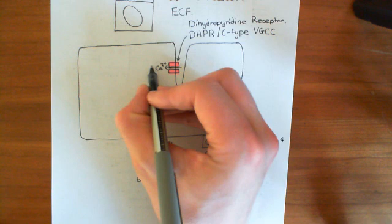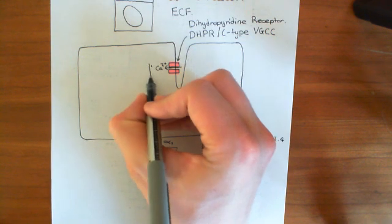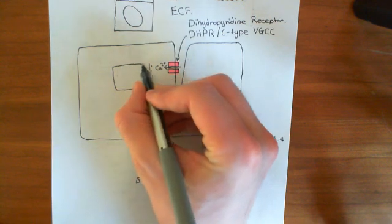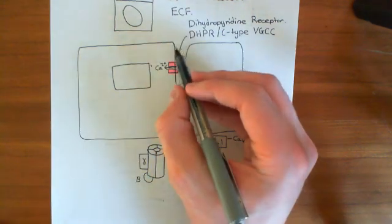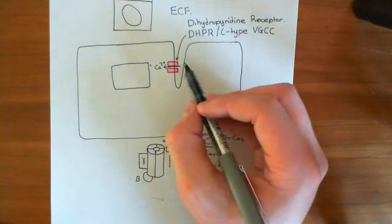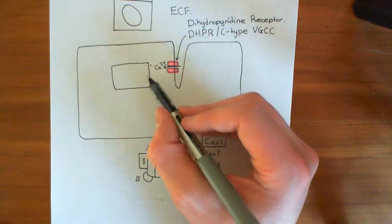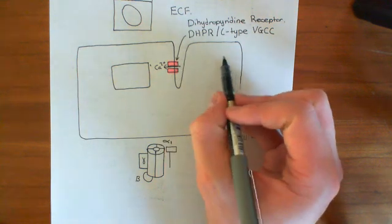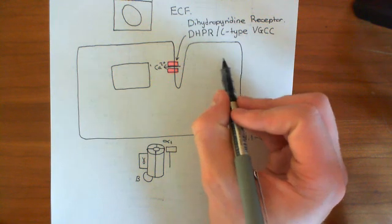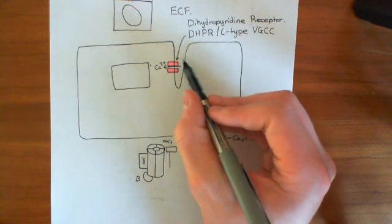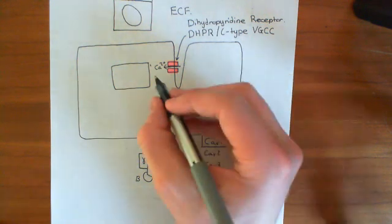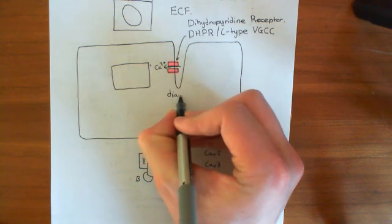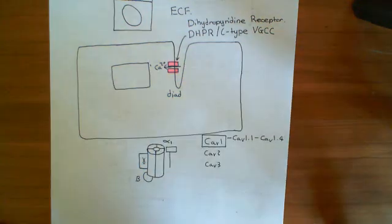Just as in skeletal muscle, the sarcoplasmic reticulum of the cardiomyocyte is positioned closely to the T-tubule. In cardiac muscle, you generally only see one sarcoplasmic reticulum close to the T-tubule — unlike skeletal muscle where you had two sarcoplasmic reticula on either side. This arrangement in cardiac muscle is called a dyad, rather than the triad found in skeletal muscle cells.